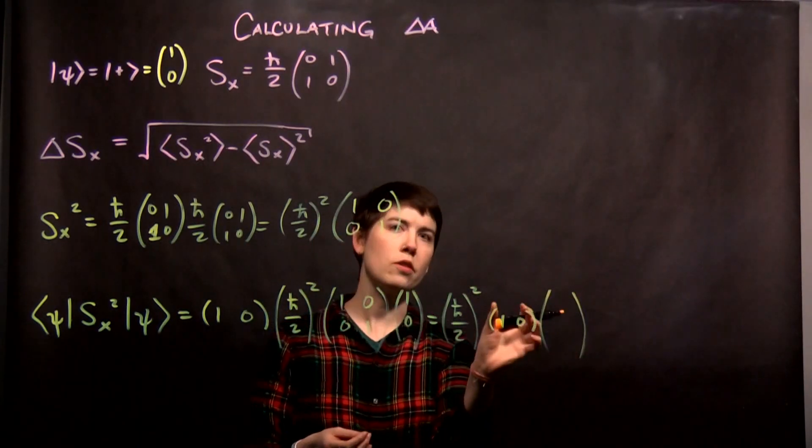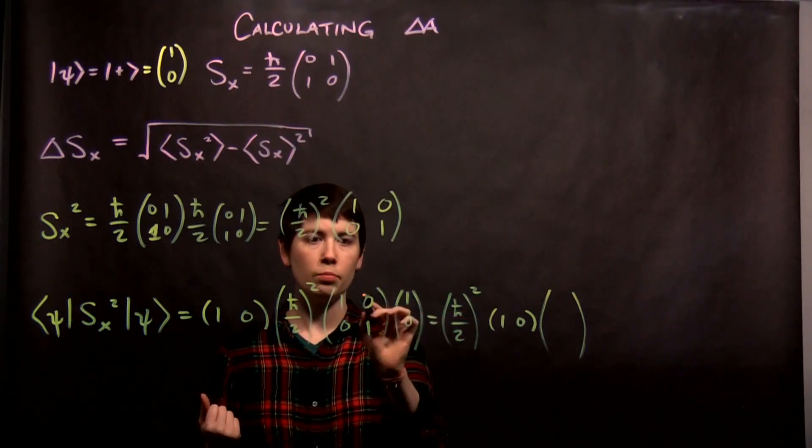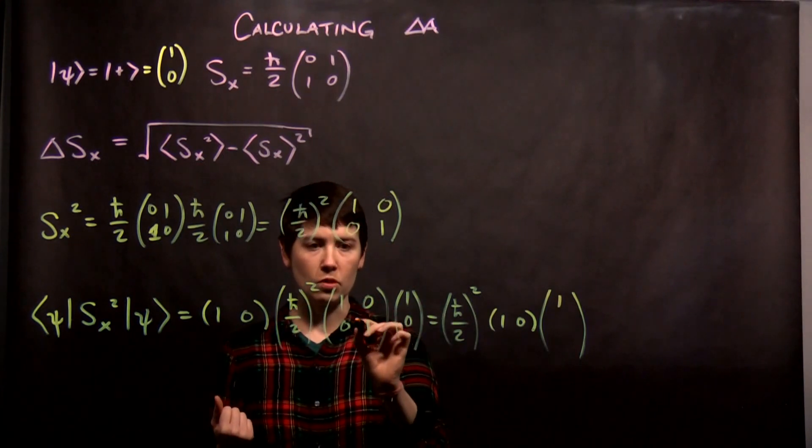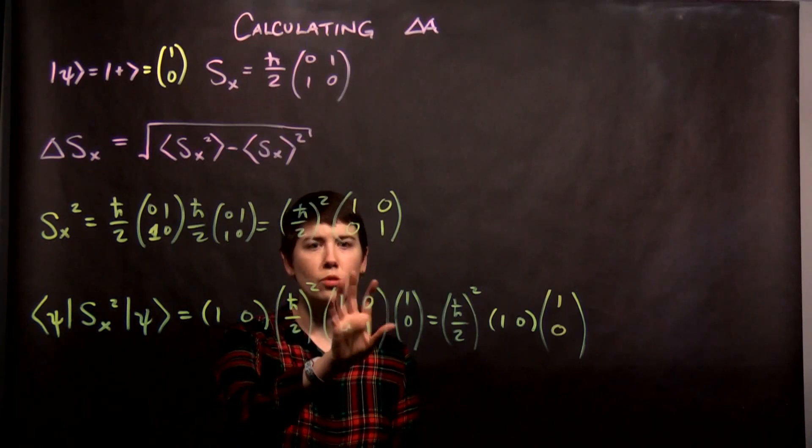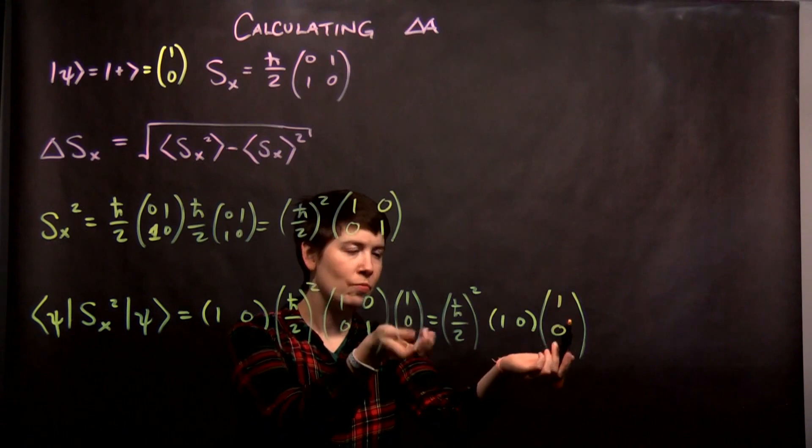And I can multiply this row vector by a column vector to get a scalar. So row, column, 1 times 1 plus 0 times 0 is 1. 0 times 1 plus 1 times 0 is 0. And it makes sense that the identity matrix is equivalent to 1. So multiplying the identity matrix times this would give me back this. So that's fine.